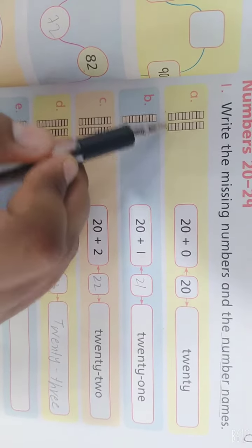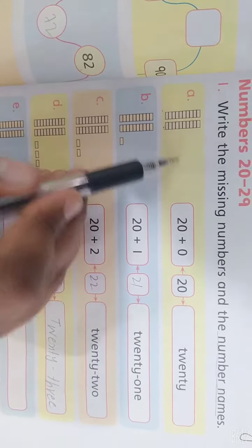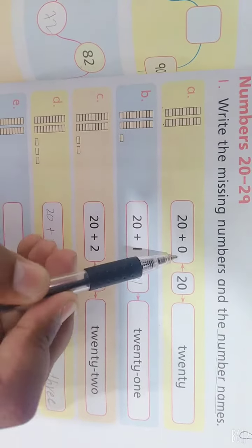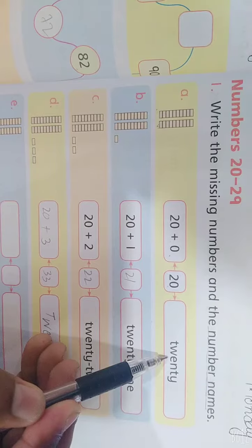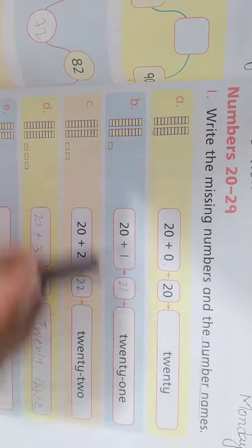ठीक है, दो है तो मेरे पास क्या है 20 और ones में कुछ भी नहीं है तो 20 plus 0 is equal to 20 and इसको हम लिखेंगे T W E N T Y number name में।